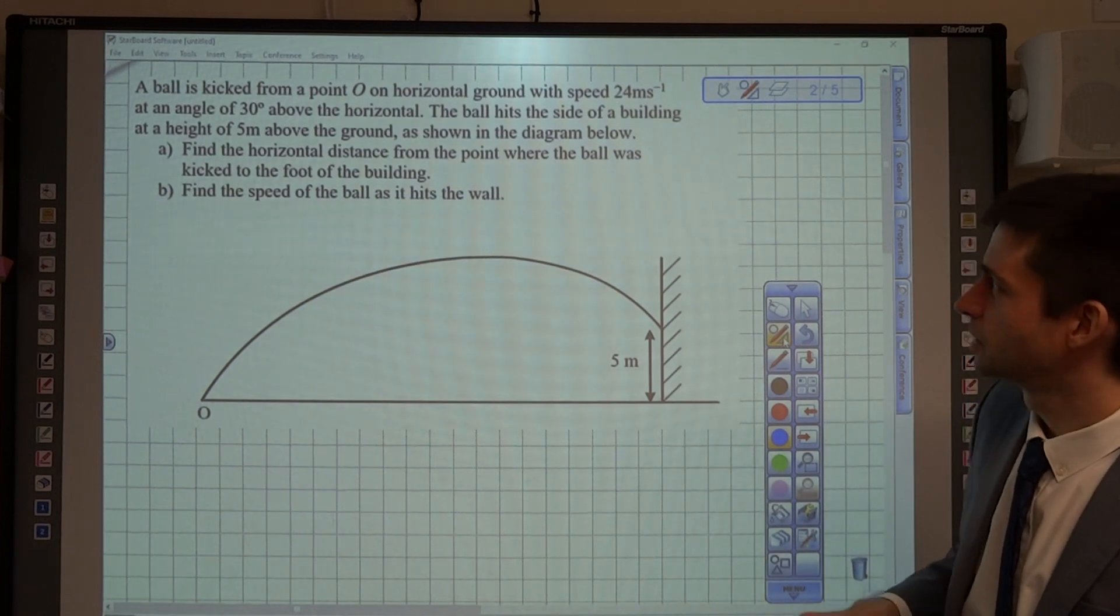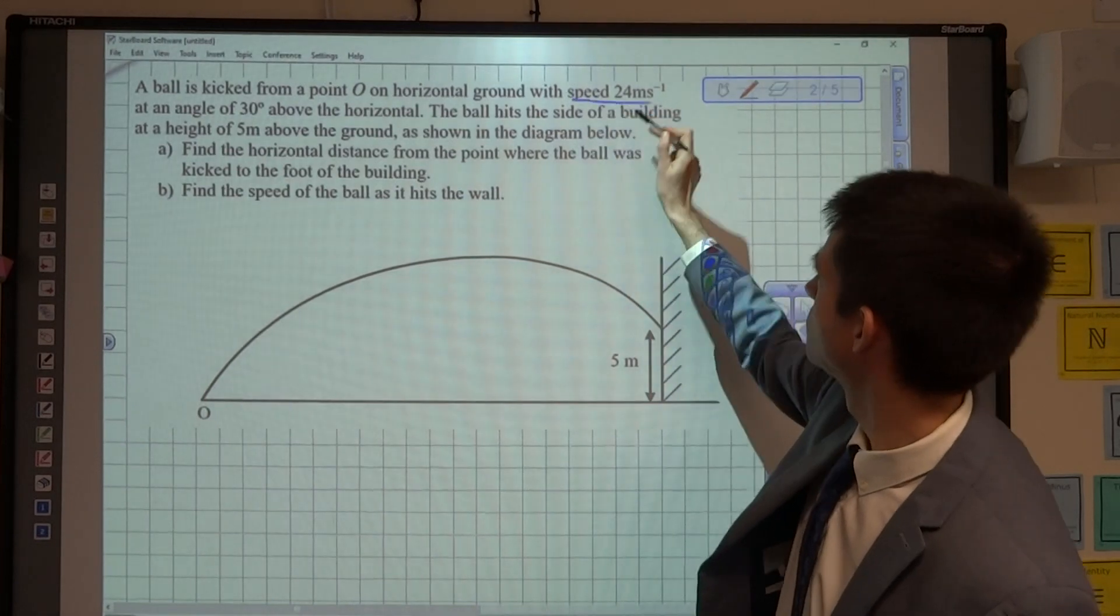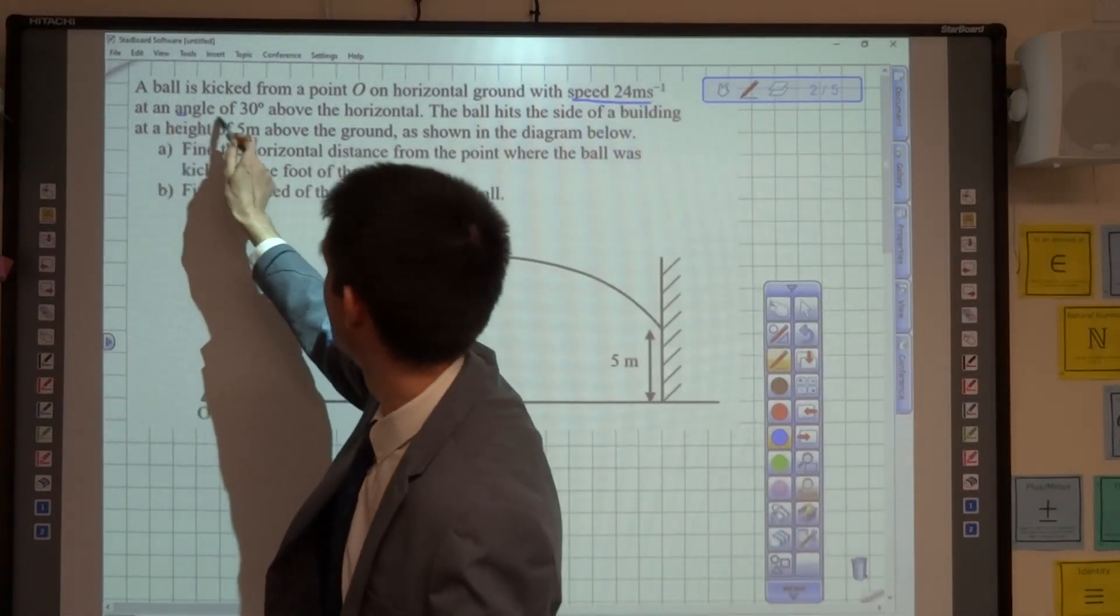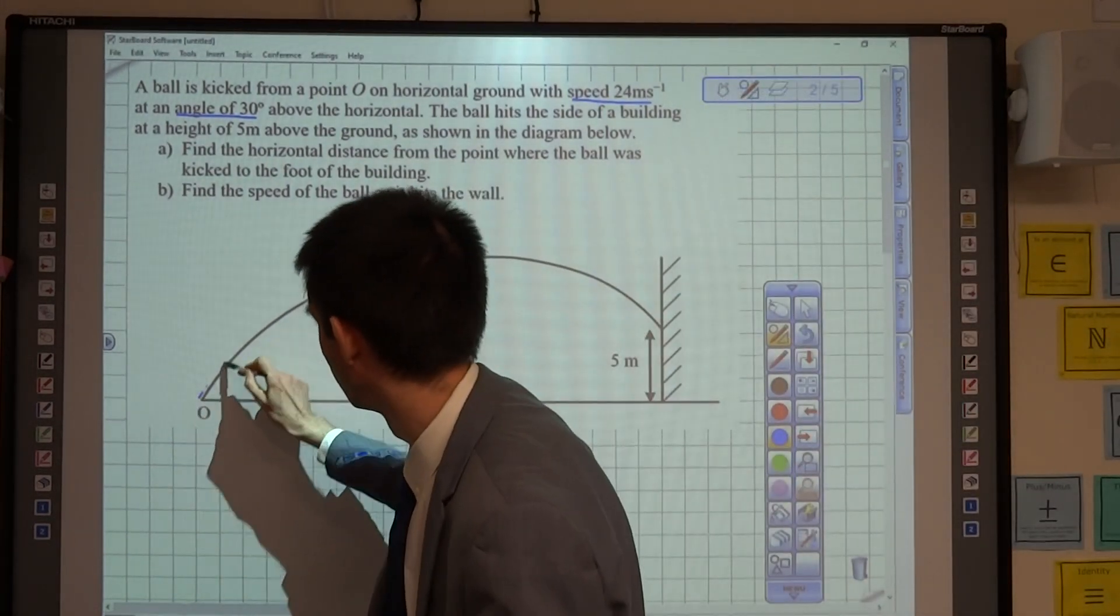The first thing I'm going to do is look at the fact that this was projected with speed 24 metres per second at an angle of 30 degrees, and I'm going to think about what this means. So, I'm going to draw it on the diagram.